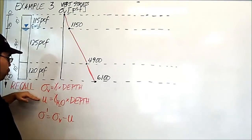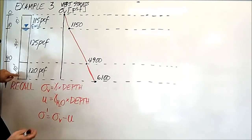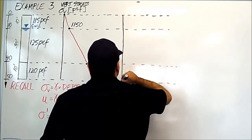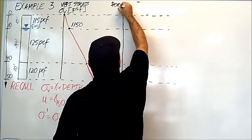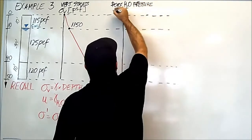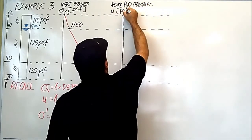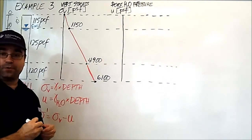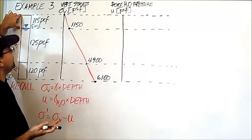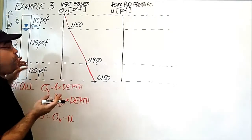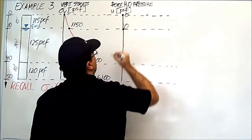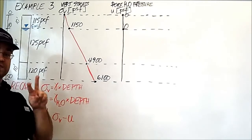Let's now move on to the pore water pressure — the buoyancy force caused by water. I'm going to draw another line and call this pore water pressure u, in pounds per square feet. As we saw in example two, until we hit water there is zero pore water pressure. So at both the top and the first interface, we have zero, because there is no water in that soil.